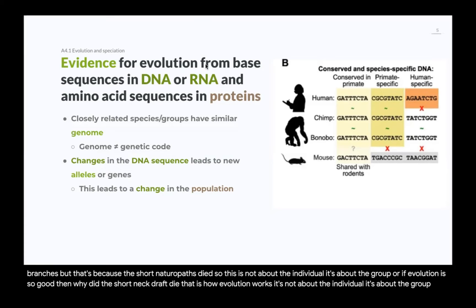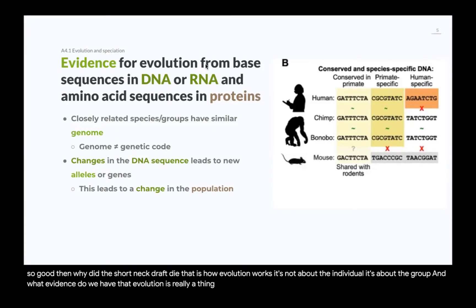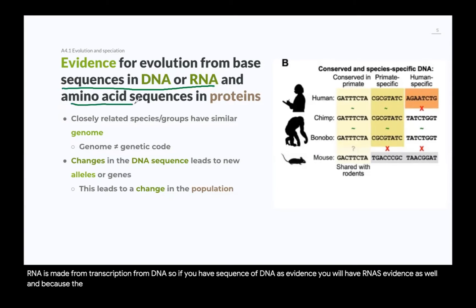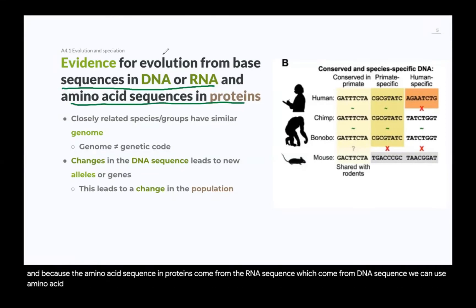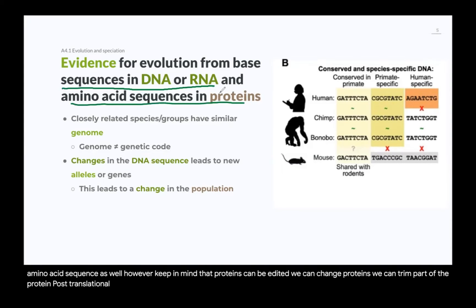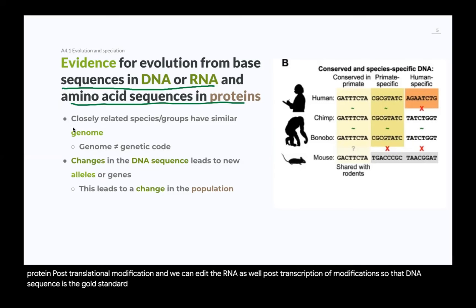What evidence do we have that evolution is real? We have sequences of DNA, and therefore RNA, since RNA is made by transcription from DNA. Because the amino acid sequence in proteins comes from RNA sequence, which comes from DNA sequence, we can also use amino acid sequences as evidence. However, keep in mind that proteins can be edited — post-translational modification — and RNA can also be edited — post-transcriptional modifications. So the DNA sequence is the gold standard.